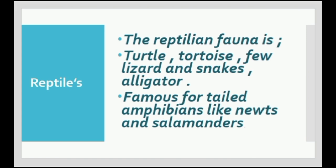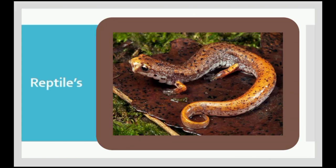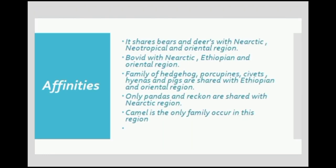Famous tailed amphibians like newts and salamanders are present in the Palaearctic region. Now we discuss affinities — meaning similarities with other zoogeographical regions. Some animals and birds present in the Palaearctic region are similar to those found in the Nearctic, Neotropical, and Oriental regions.